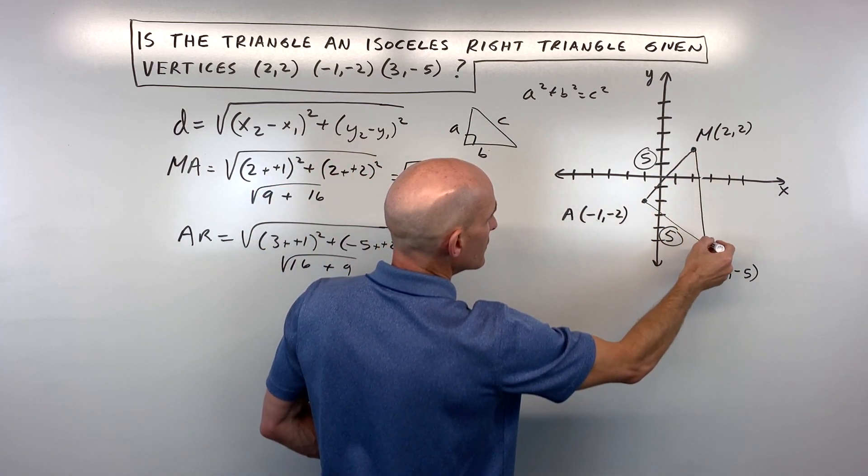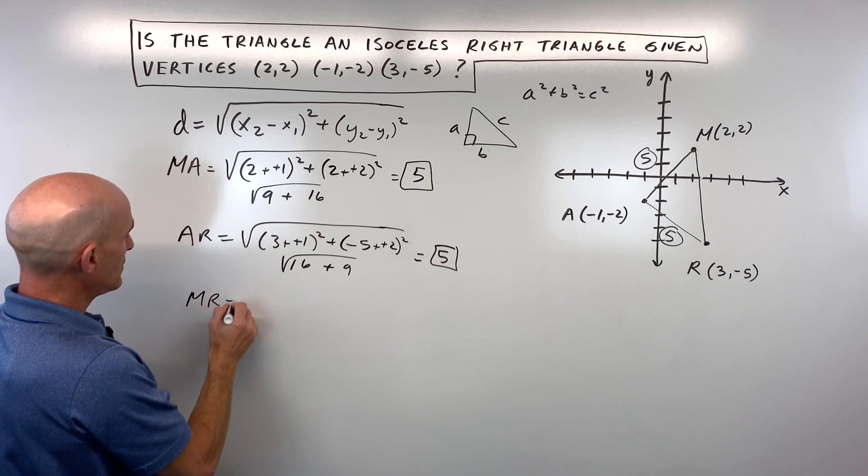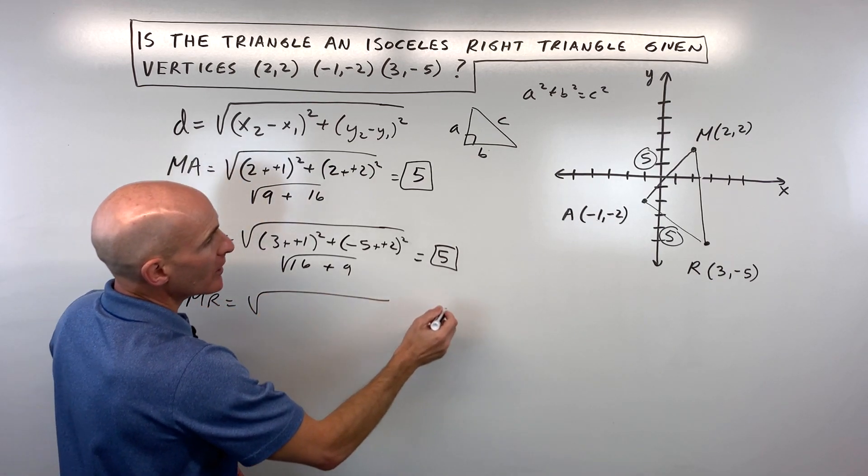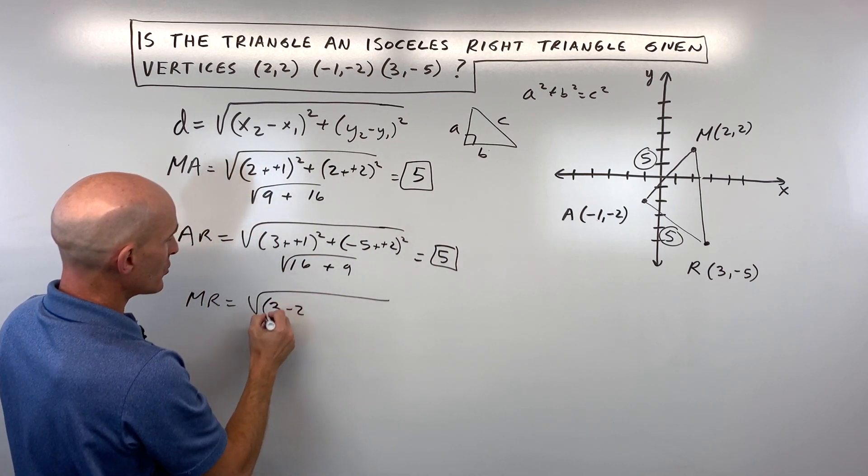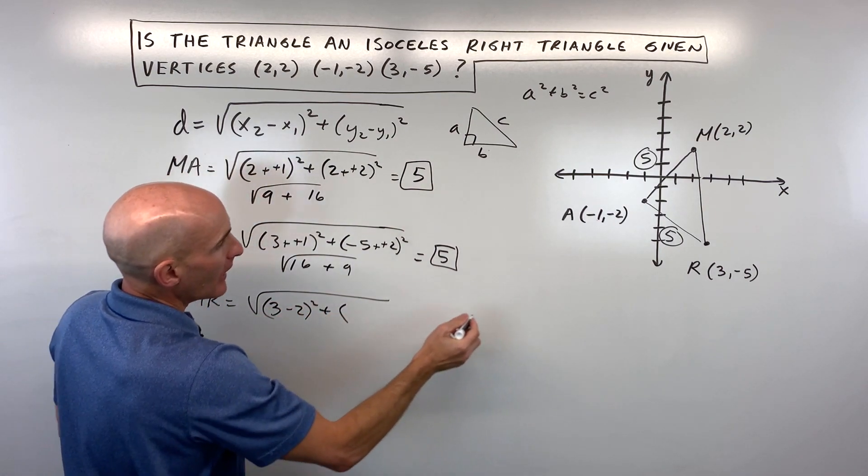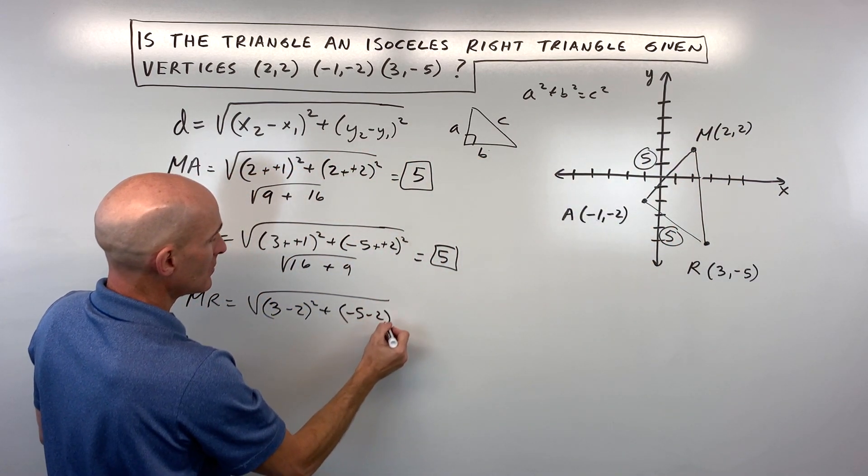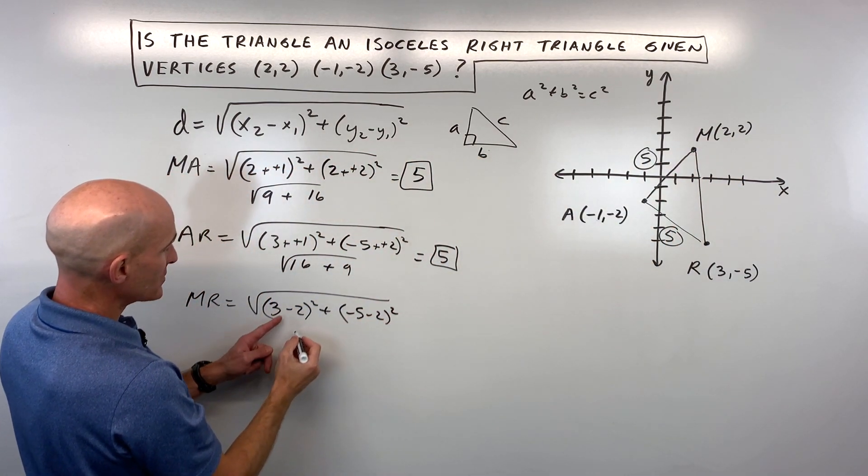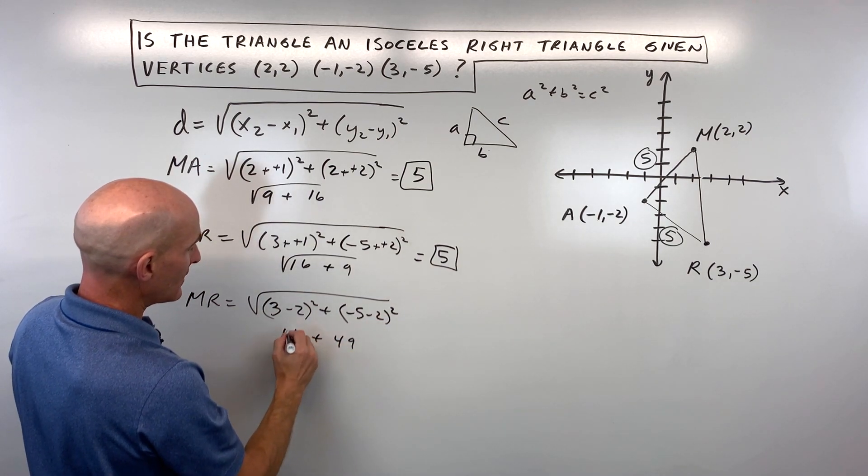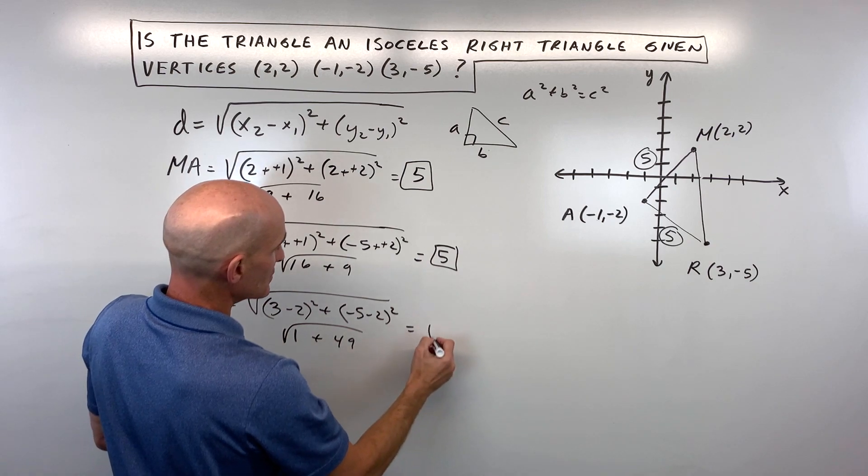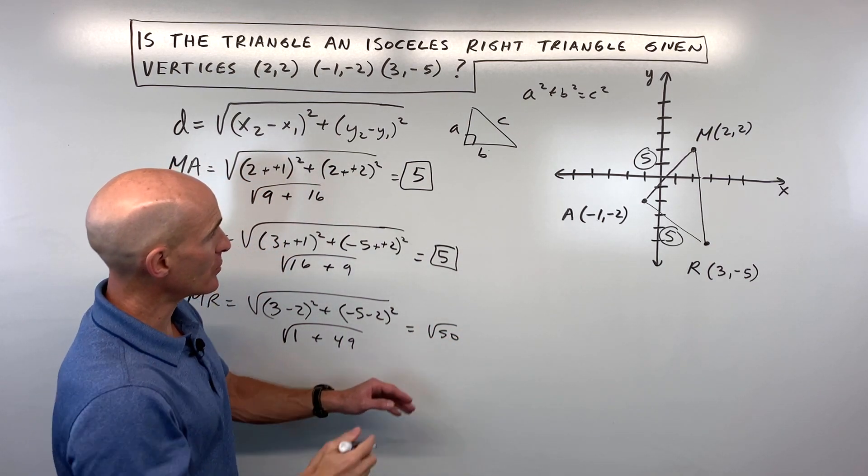What about this third side, MR? Let's find that length. Again, the square root of (3 - 2)² plus (-5 - 2)². That's 1² which is 1, and (-7)² which is 49, and that comes out to the square root of 50. We can simplify that, but for right now let's just leave it as the square root of 50.